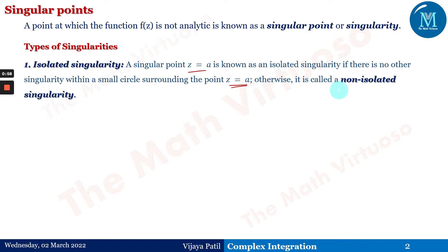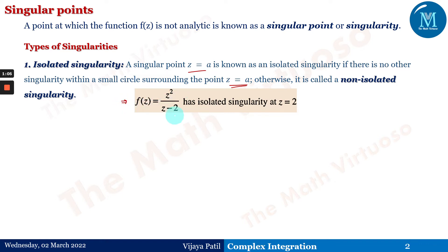Otherwise it is called non-isolated singularity. For example, f(z) = z² / (z − 2) has isolated singularity at z = 2, because this function is analytic only if the denominator is not zero. Equating the denominator to zero gives us the singularity. It is isolated singularity because there is no other singularity present surrounding z = a.